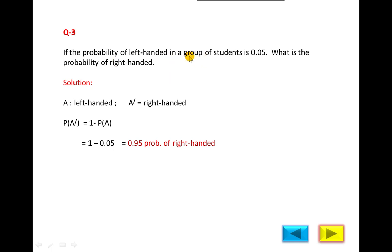So left-handed: suppose A is left-handed, A complement will be right-handed. The person or student may be left-handed or right-handed, two possibilities. So we use complementary event. Probability of A complement equals 1 minus probability of A. Probability of A left-handed is given as 0.05. Substitute here and you will obtain 0.95, probability of right-handed.